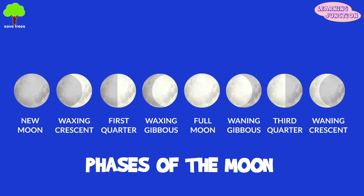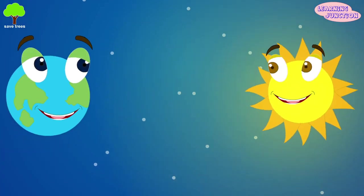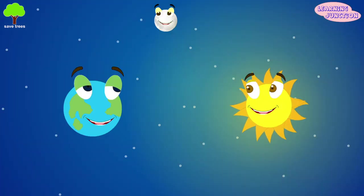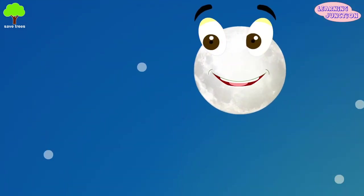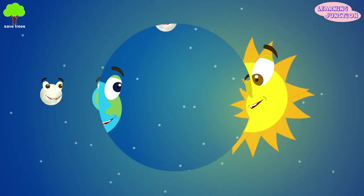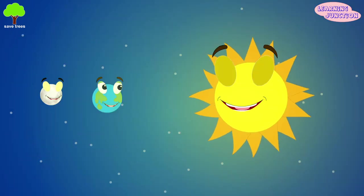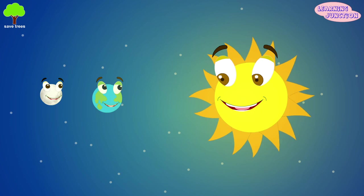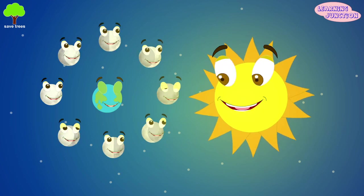You'll be surprised to know that the way the moon looks is not as much about the moon as it's about the sun and our Earth. As mentioned earlier, the moon shines because it reflects light from the sun. The portion of the moon facing the sun is always lit up, and the portion facing away from the sun is in darkness — and thus we see different shapes of the moon.